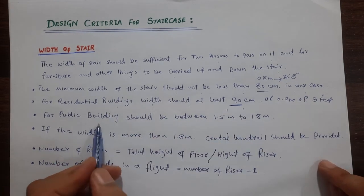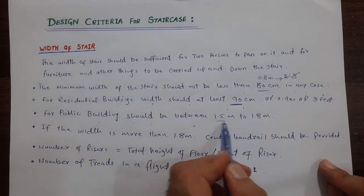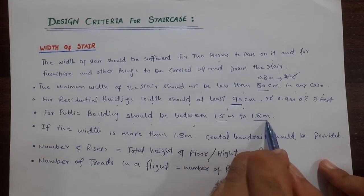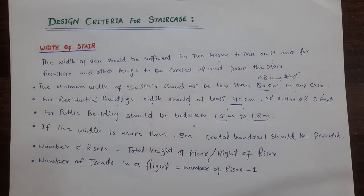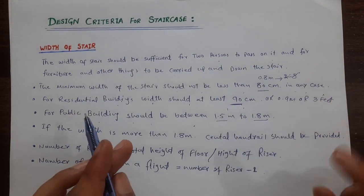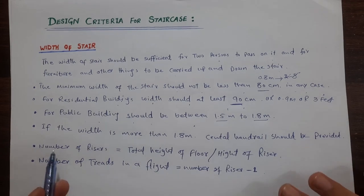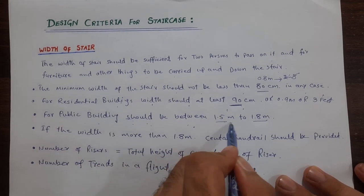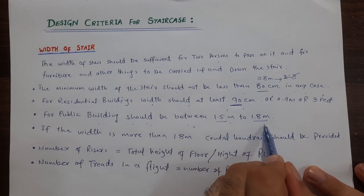For public buildings, the width should be between 1.5 to 1.8 meters. This should be the width of the staircase; otherwise you will face problems in the construction of any building.